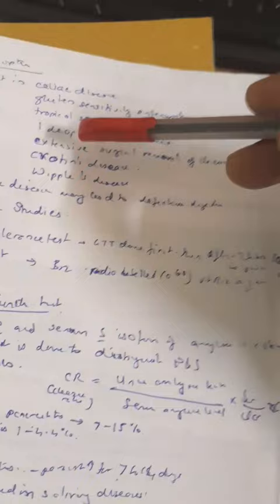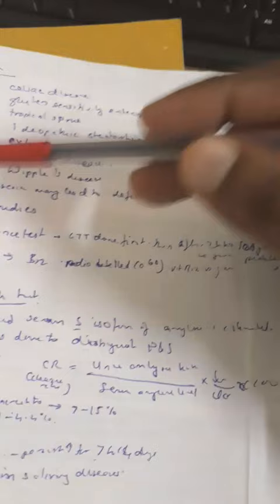The diseases that can be analyzed include celiac disease, glucose sensitivity and enteropathy, tropical sprue, extensive surgical removal of ileum, chronic disease and Crohn's disease. These are malabsorption diseases, but pancreatic diseases also lead to effective malabsorption.